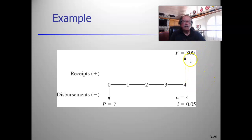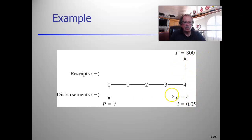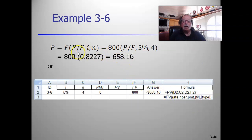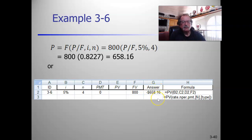Going backwards: if you know you're going to have $800 in four periods at an interest rate of 5% per period, what do you have at time period zero? Time period zero is 800 divided by (1.05) to the fourth. Using the PV function with B2 at 5%, C2 at 4 periods, payment zero, and 800 as a positive number, the answer comes back as negative $658.